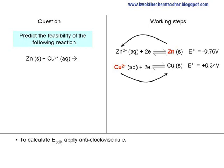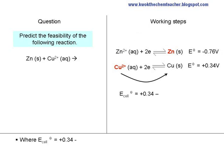To calculate E-cell, apply the anti-clockwise rule, where E-cell equals positive 0.34 minus negative 0.76, giving us an E-cell of positive 1.10 volts.